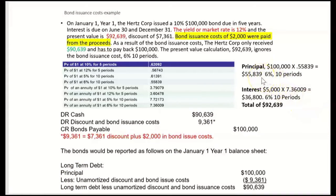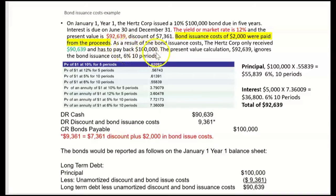Adding present value of principal $55,839 plus present value of interest $36,800 equals $92,639 — that's the bond proceeds if there were no bond issuance costs. We calculate the bond proceeds first as if there are no issuance costs. Then we check: bond issuance costs of $2,000 were paid from the proceeds, so Hertz Corp only receives $90,639 instead of $92,639, yet they must still pay back all $100,000 when the bonds mature.